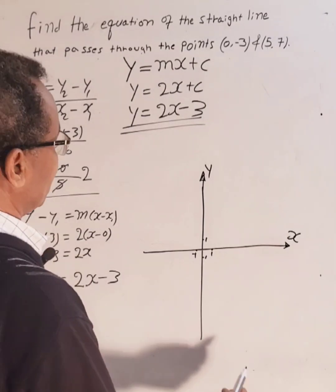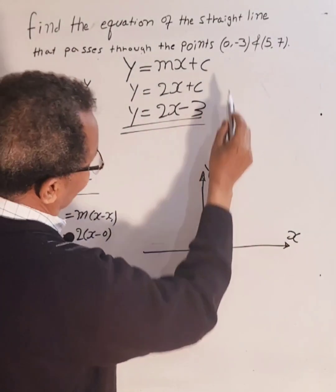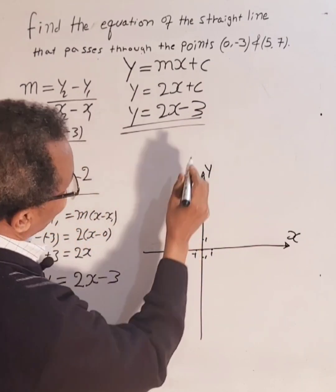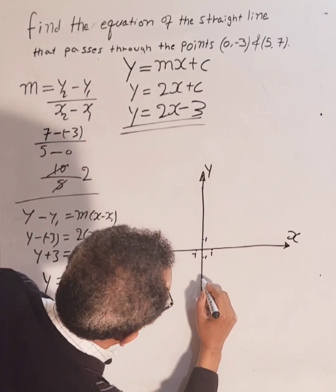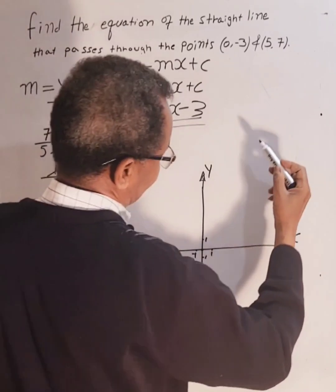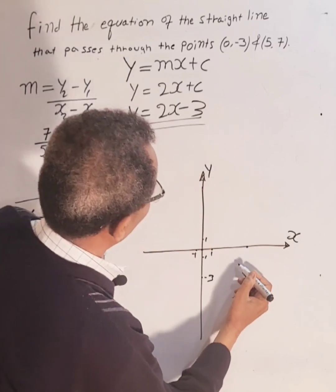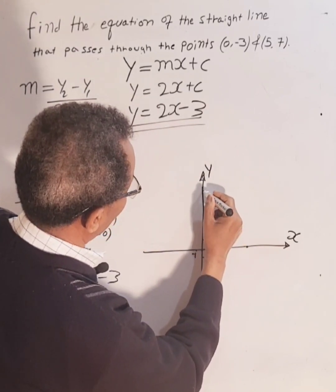Let's now plot the points. When x is 0, y is -3. Let's put it around here, negative 3. And when x is 5, y is 7. Let's say around here, so around this point.